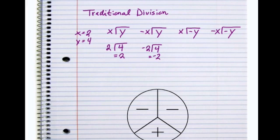2 divided by negative 4 is negative 2, and negative 2 divided by negative 4 is positive 2.